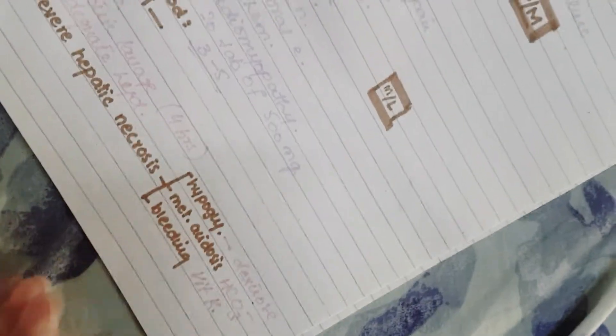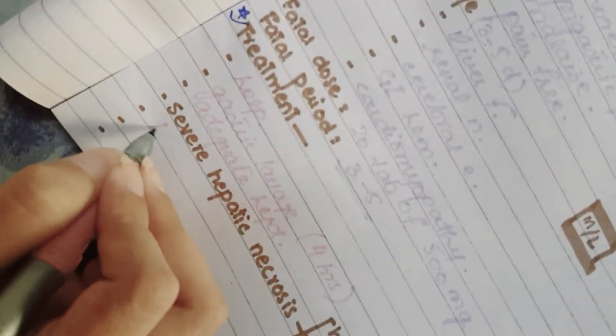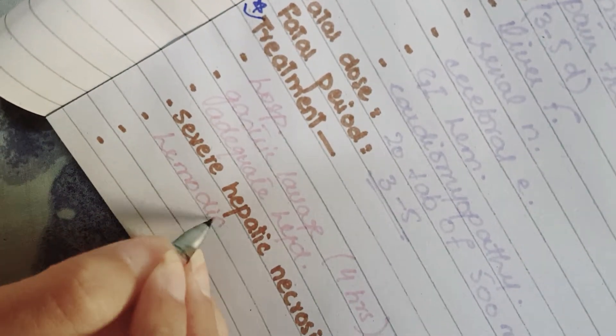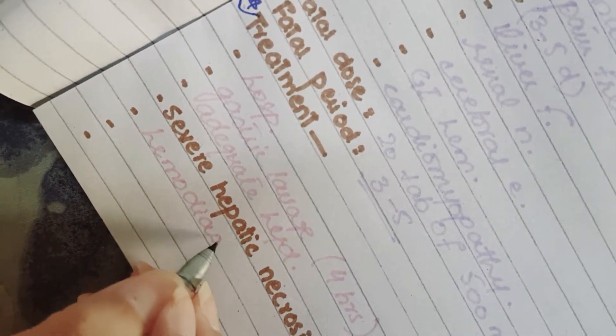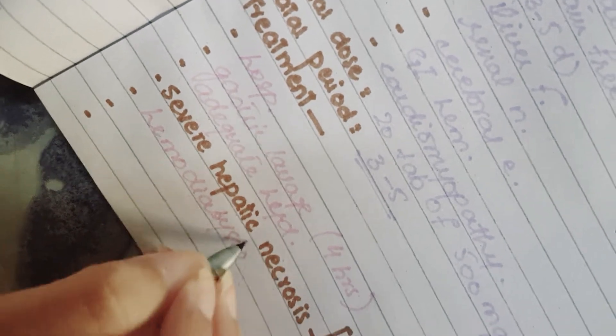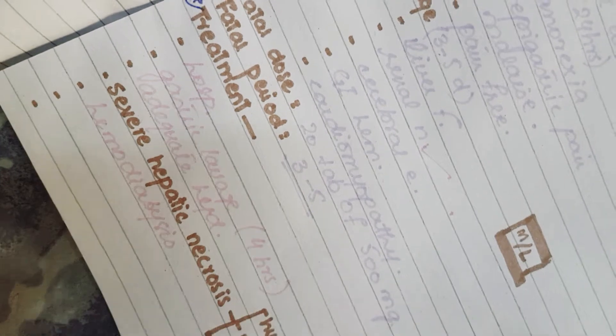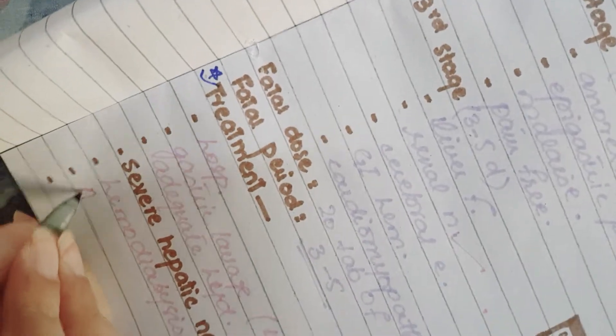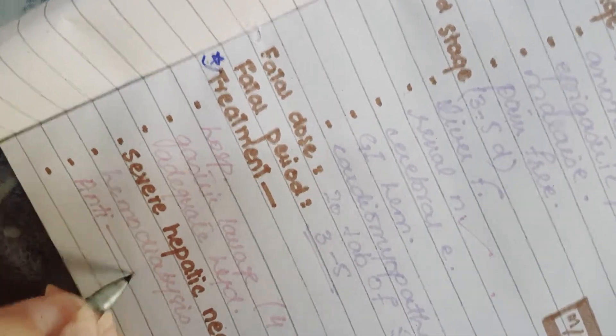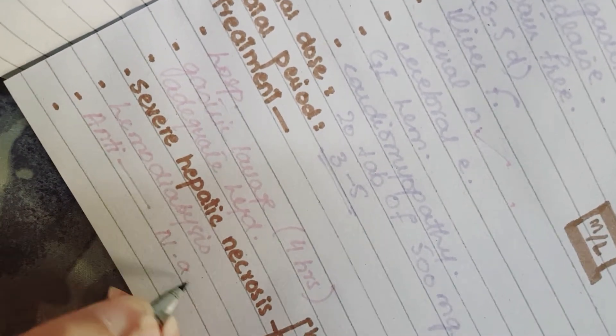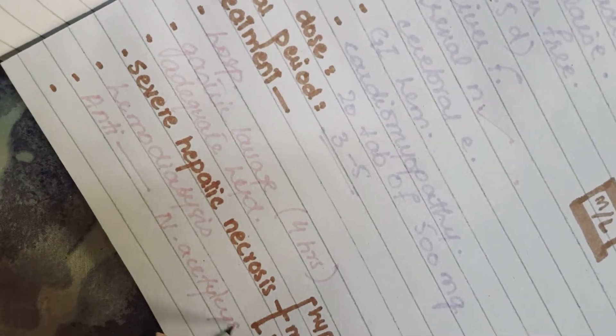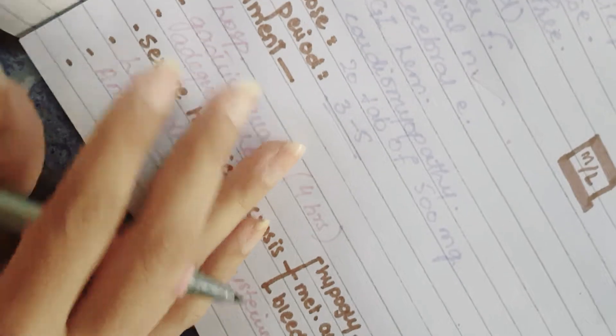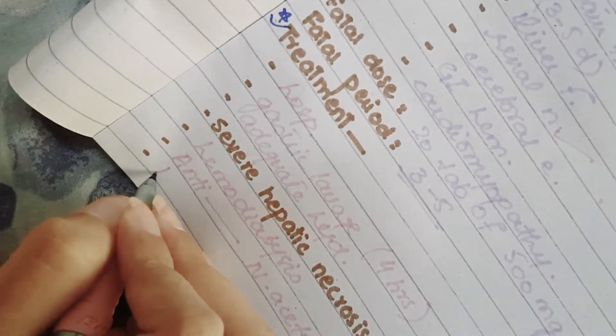The next thing you're going to do is hemodialysis, done in those conditions when there is acute renal failure. Then you can give an antidote - you have to remember its name because it is an important MCQ - N-acetylcysteine. You can also give hypertonic glucose if there is cerebral edema.